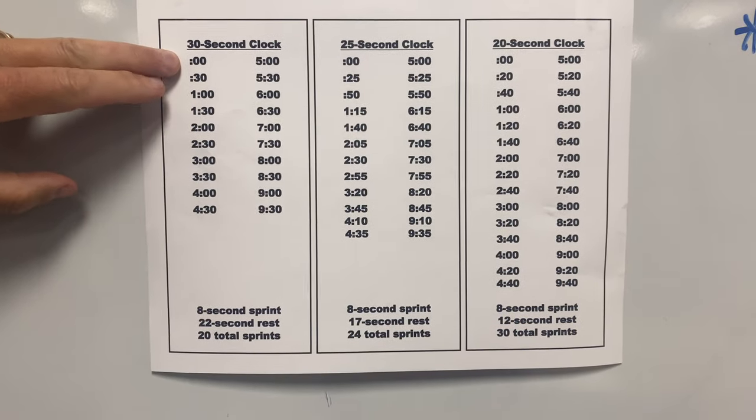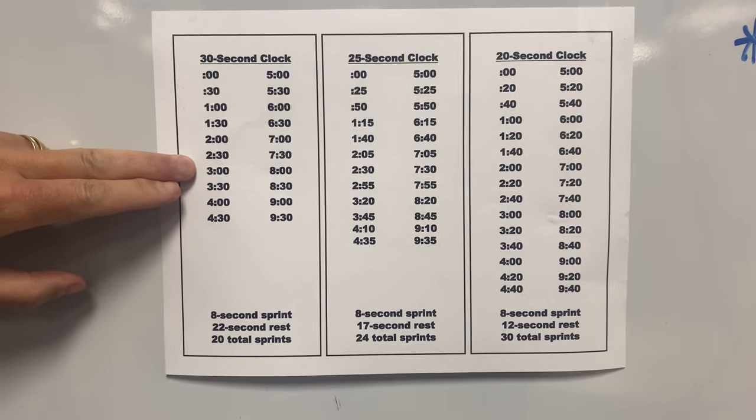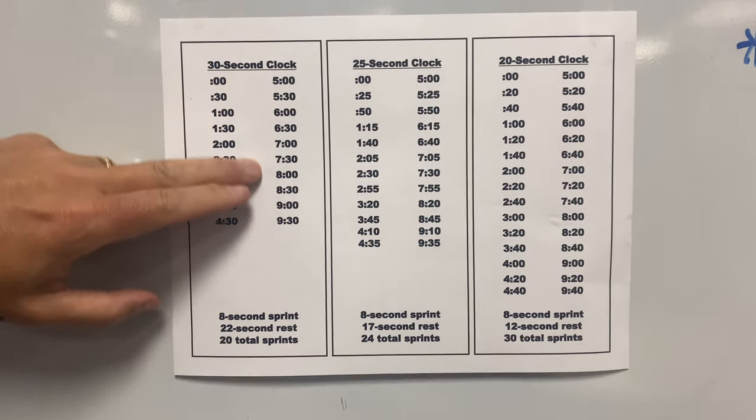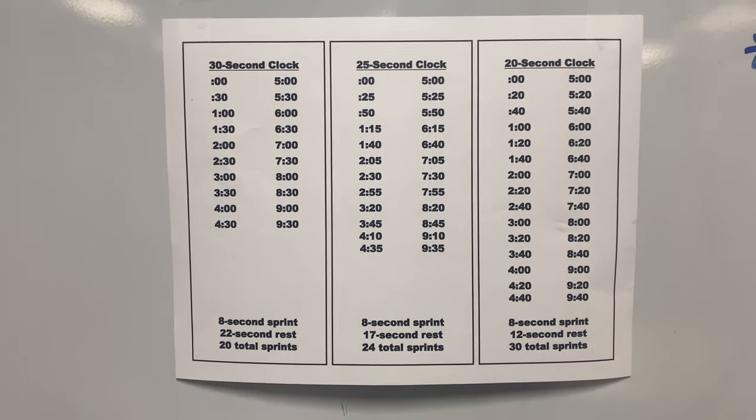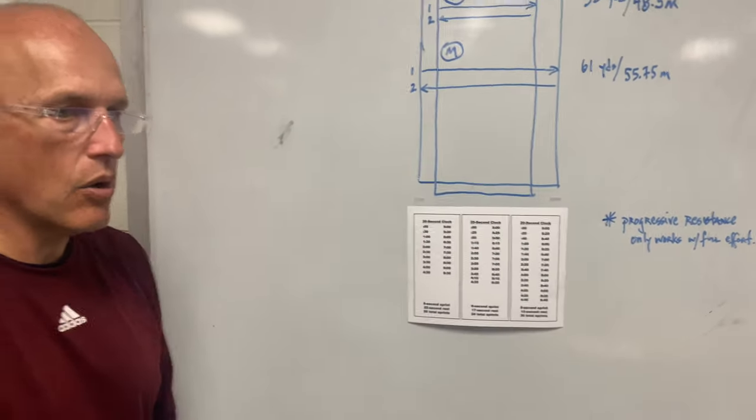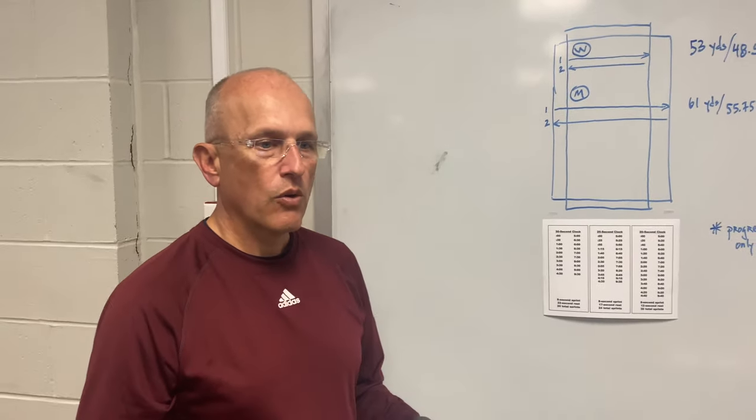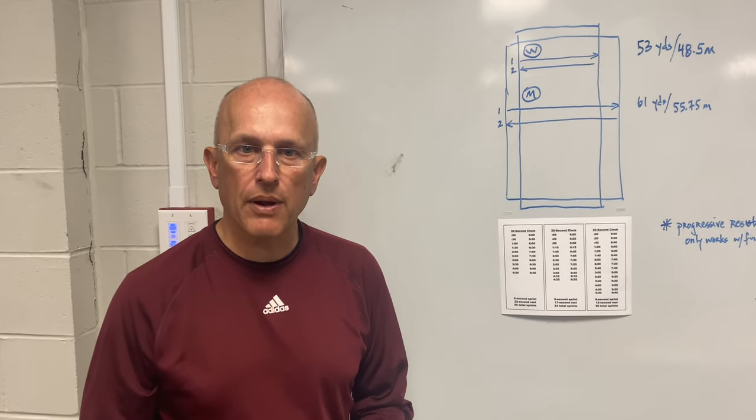That means you're running your first sprint at zero, then 30, one minute, one 30, two, two 30, and so forth and so on all the way through to 10 minutes. So that's about an eight second sprint and a 22 second rest. If you really are only capable of running three minutes of this at the beginning of the summer at your all out effort, then that's where we want you.